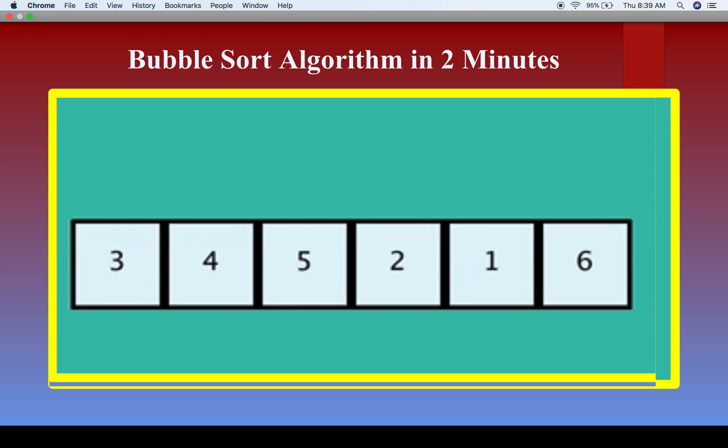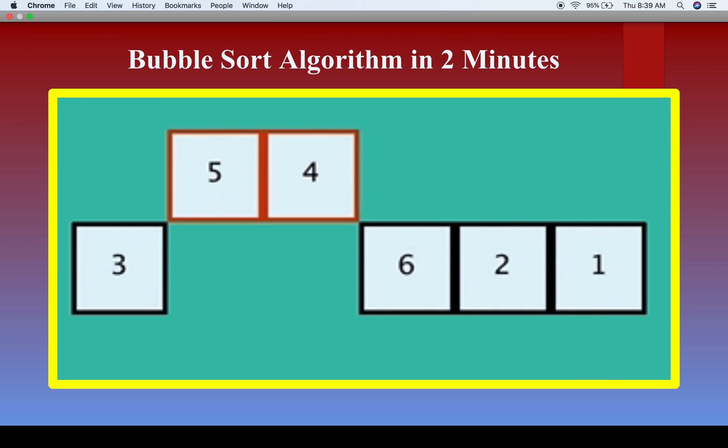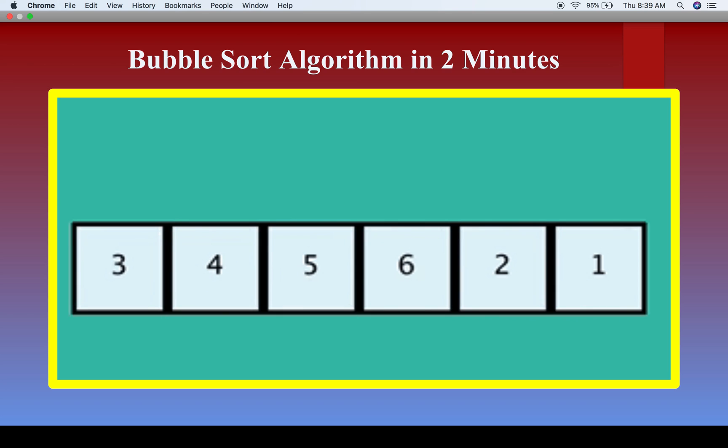So first, what we do is we compare the first and second numbers, 3 and 4. Next, we compare 4 and 5. It goes on like that. So we'll have it as a demo. We compare 3 and 4.